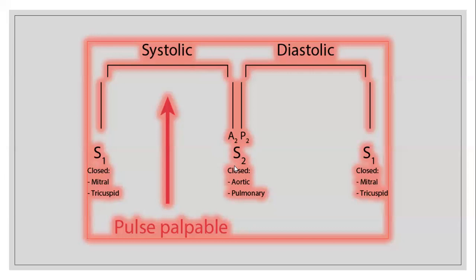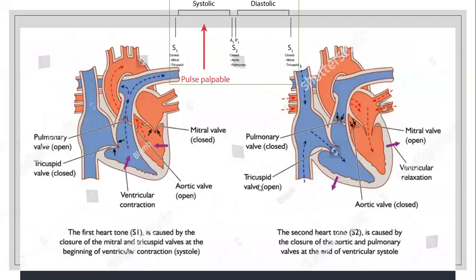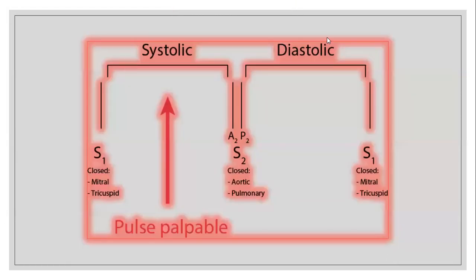Second heart sound is caused by closure of aortic and pulmonary valves. S2 is the sound of the aortic valve making when it shuts down at the end of systole, or the beginning of diastole. S2 is produced to prevent blood from backflow out of the aorta into the ventricle.